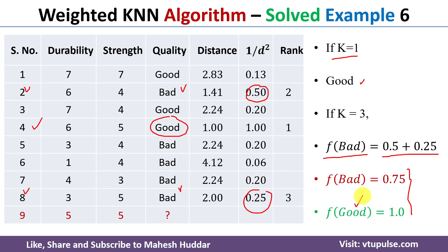Comparing the two methods: with basic KNN at k=3, the new example was classified as 'bad', but with weighted KNN at k=3, it is classified as 'good'. This illustrates how the basic KNN and weighted KNN algorithms can yield different results on the same dataset.